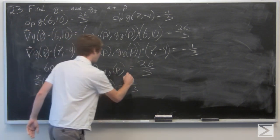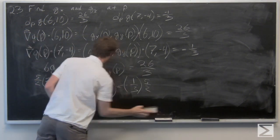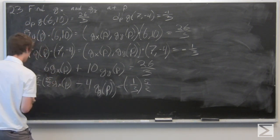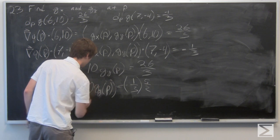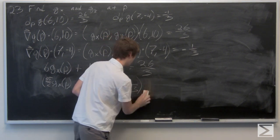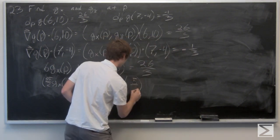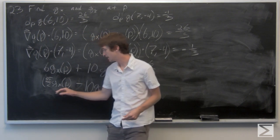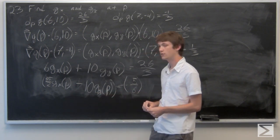Multiply both sides of the second equation by 5/2. We get 35/2 times the partial derivative of g with respect to x at p, minus 10 times the partial derivative of g with respect to y at p, equals negative 5/6.